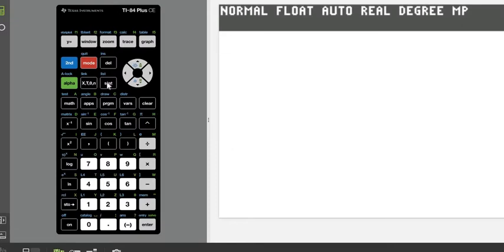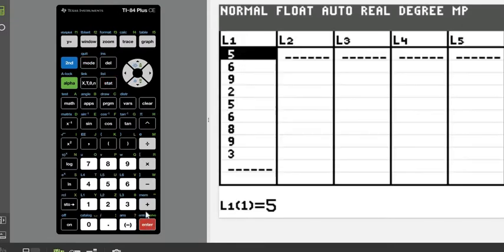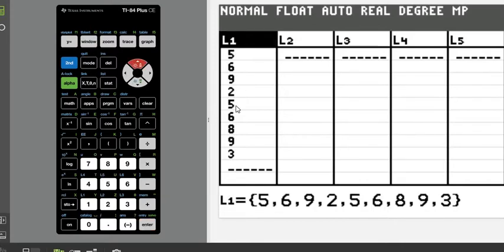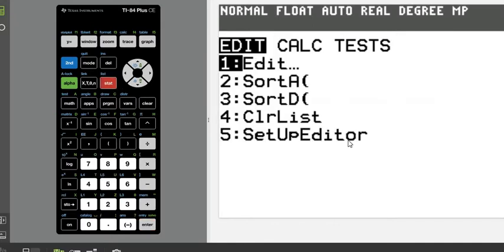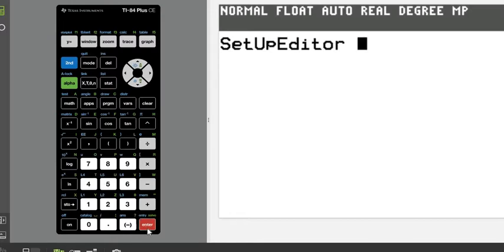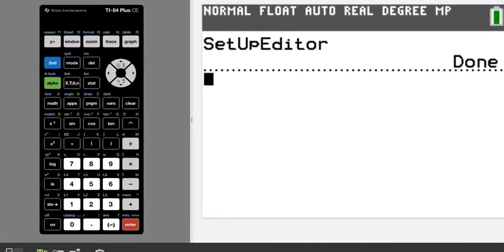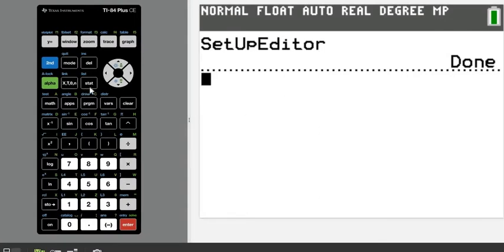So what we're going to do is hit stat and go into edit, which is our spreadsheet screen. And I'm going to go ahead and clear out the information that I have in here. So instead of having to individually delete each value, you can just hit the clear button when you're highlighted on L1 and hit enter and it will erase all of the values. Don't hit delete. Delete will actually delete the column. So if you do happen to delete, setup editor 5 and done and enter, when it says done, it will set up your list so that all of them are back.